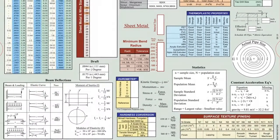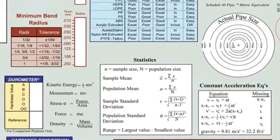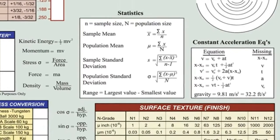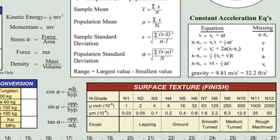In the lower right, you'll see tables showing constant acceleration formulas and basic statistic formulas. Below those is a conversion table for different surface finishes, or surface texture call-outs, and the machine operation required to achieve each finish.